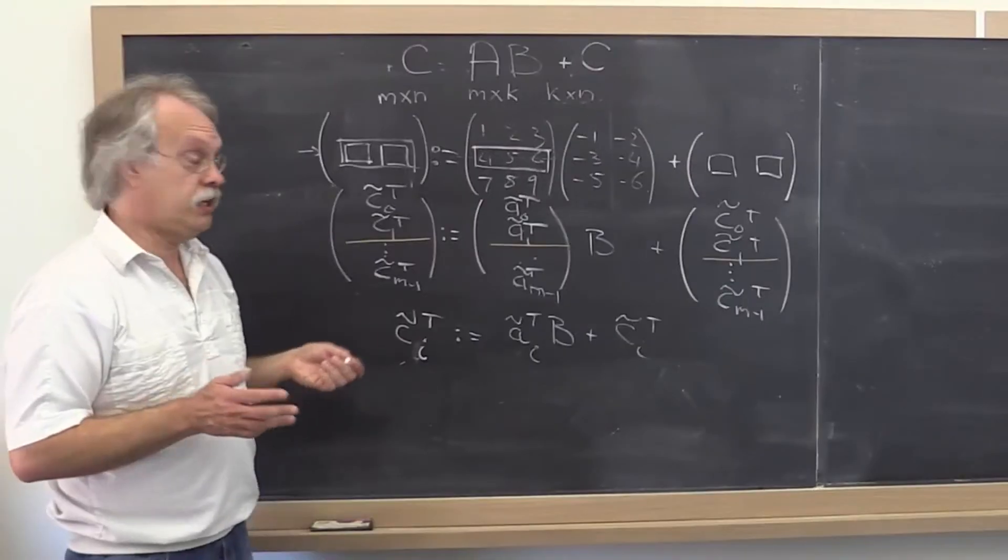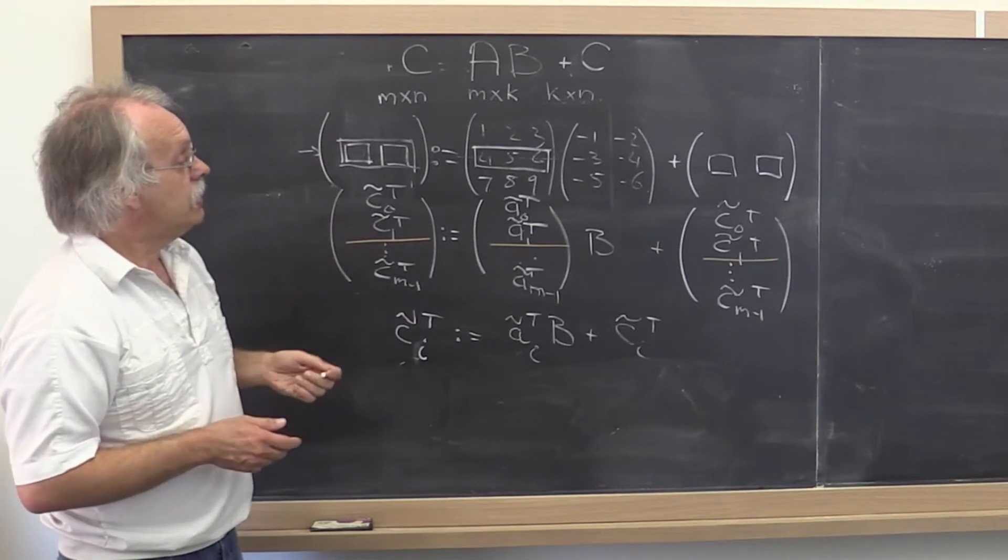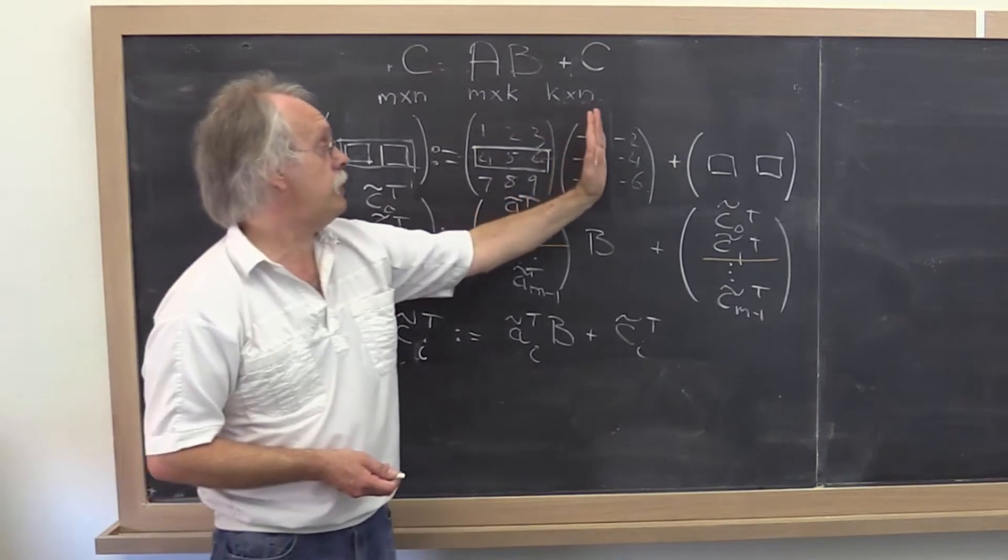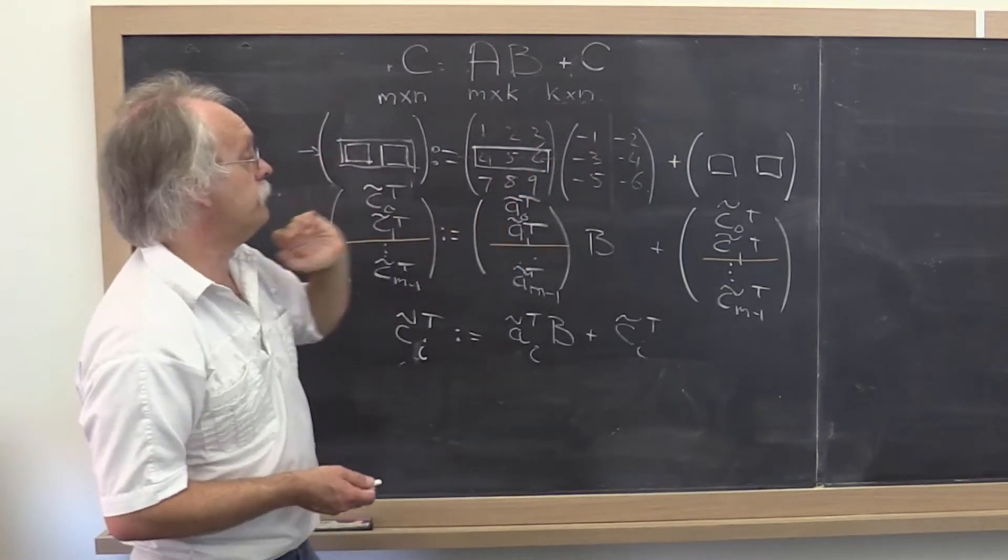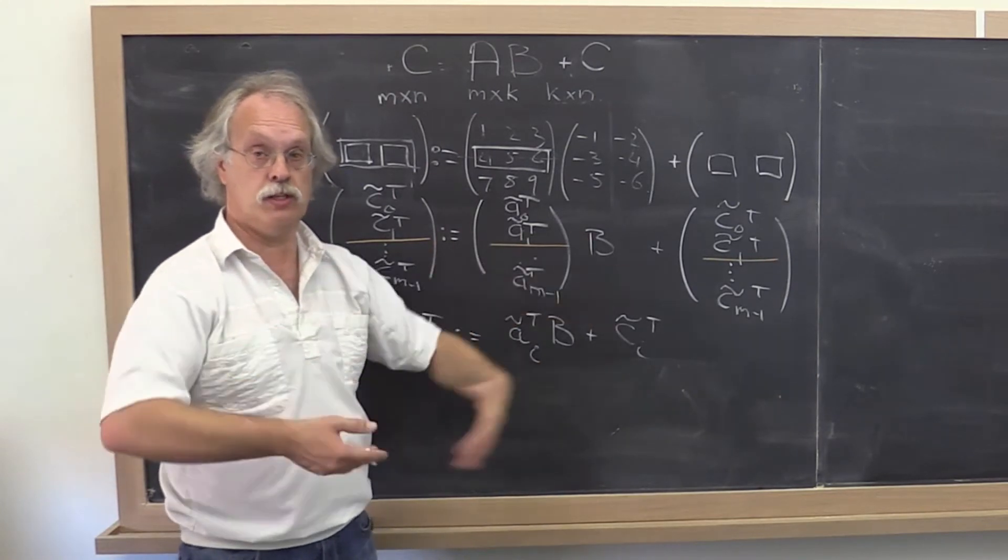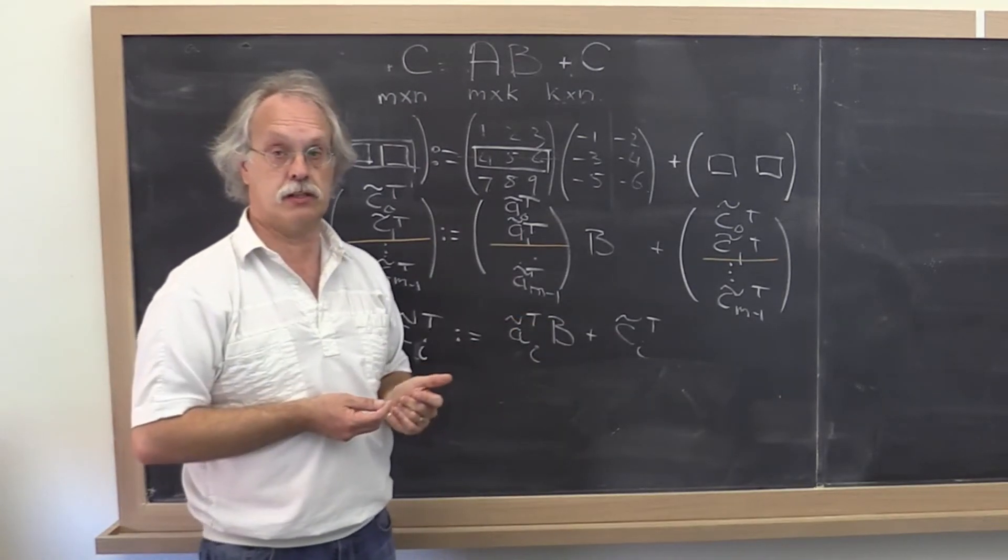So what you can do now is go back and say, how did we come up with a partitioned matrix expression when we had our discussion about how to compute columns of C from columns of B? What we did is we took what we learned and we made it into a partitioned matrix expression.